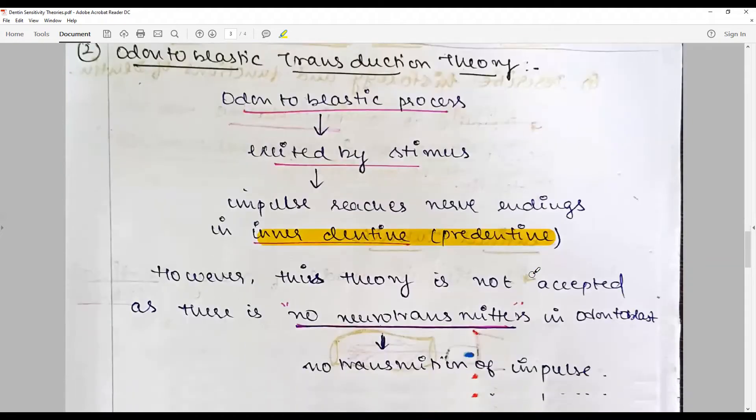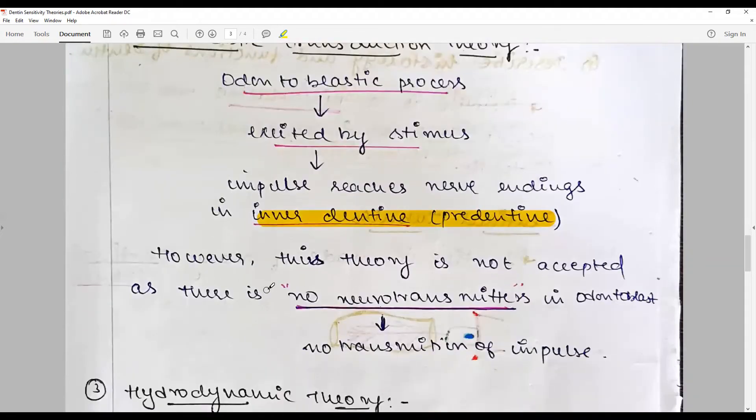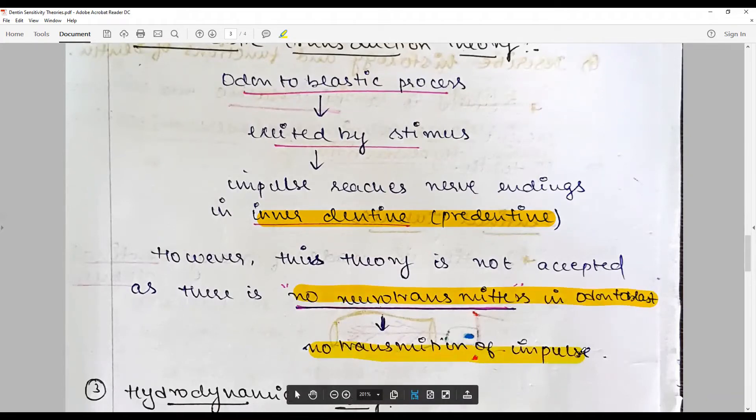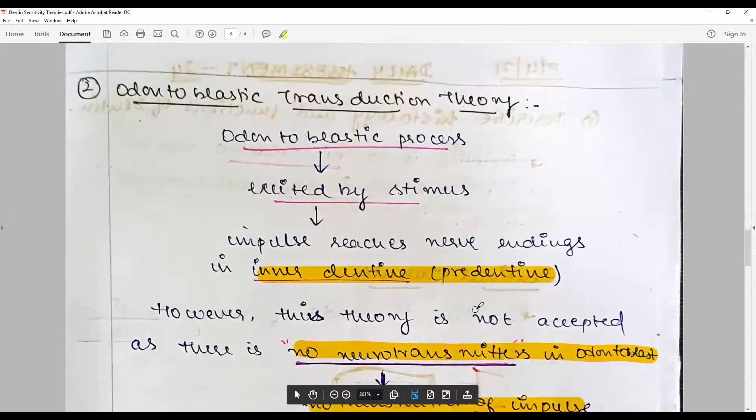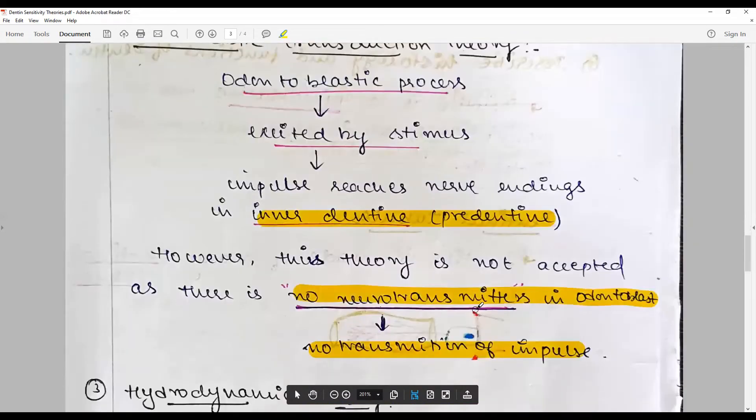However, this theory is not accepted because there are no neurotransmitters in the odontoblast, hence it's not possible that the impulse could be transmitted. So this transduction or conveying of the information is not possible.